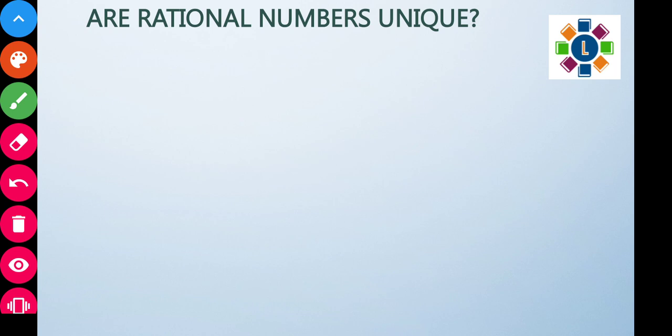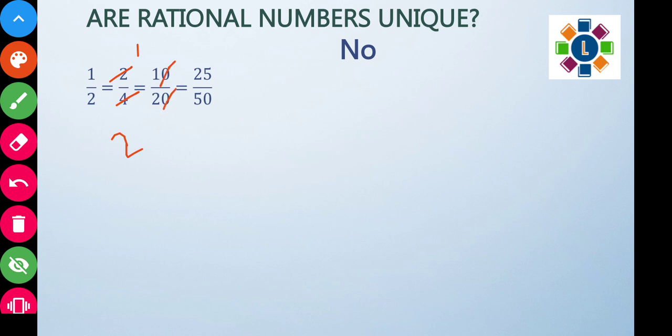Rational numbers are not unique in representation. For example, one by two can also be written as two by four, ten by twenty, or twenty-five by fifty — infinitely many equivalent forms. If you simplify any of these, you get back one by two. So a rational number does not have a unique representation.